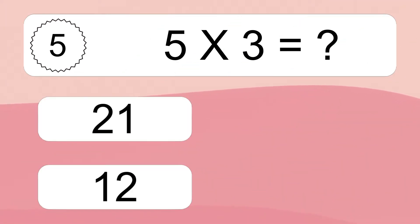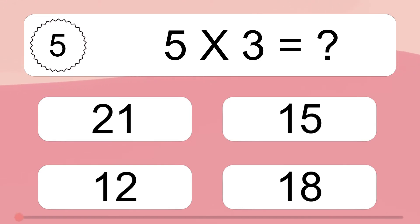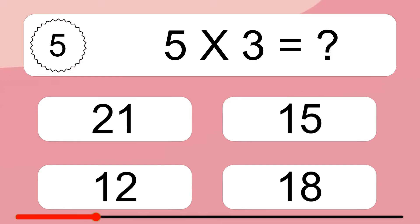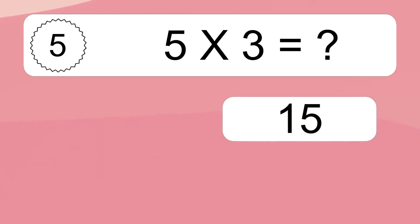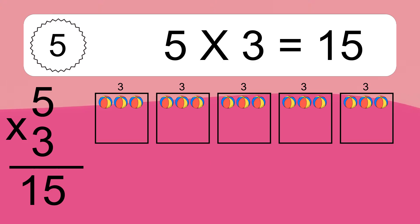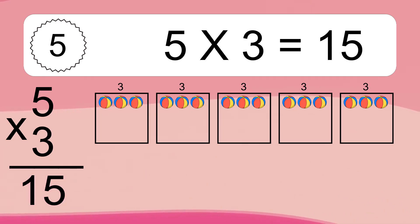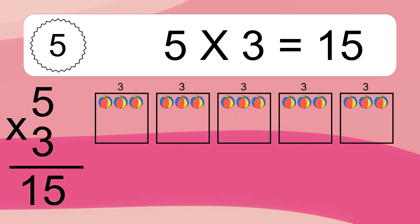5 times 3 equals what? 5 times 3 equals 15. We have 5 boxes, and each box has 3 colorful balls inside. If you count all the balls in all the boxes together, you will have 5 times 3 balls. This equals 15 balls.